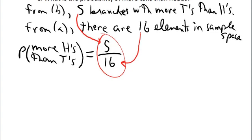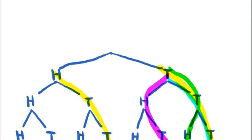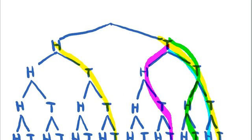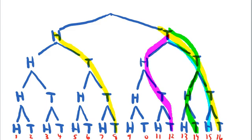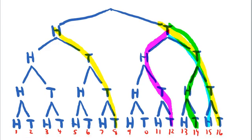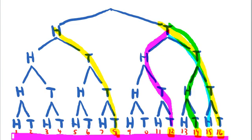Looking at the tree diagram to be consistent: you can see there are five branches — one, two, three, four, five — with more tails than heads, out of a total of 16 altogether. So five out of 16 is the probability.